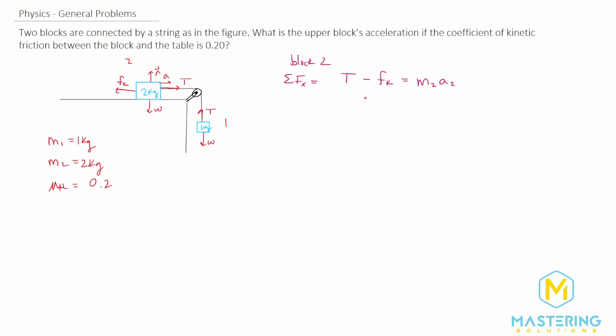Obviously we'll break that up as T minus mu sub k times n equals m2 a2 and now we can change the n. If we sum the forces in the y direction, n is equal to the weight which is mg. I won't show all those steps because we've done lots of other questions like that so it should be pretty straightforward at this point. So T minus mu sub k times m2 g equals m2 a2. So now this one's done.